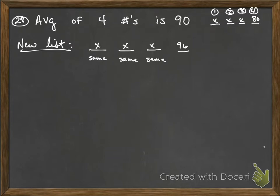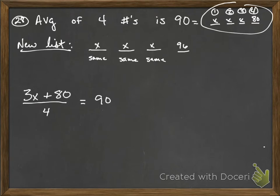With this original, we have 3x plus 80 divided by all four equals 90. The average, that's how I get divided by four. Add up the total, divide it by the total number of numbers that you have, which is four.